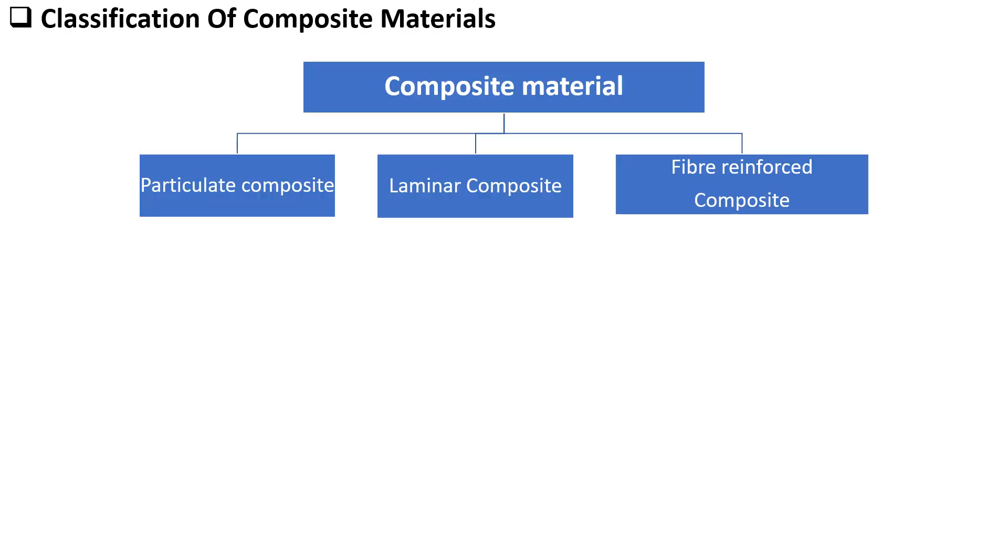Now let's talk about the classification of composite materials. Composite materials are broadly classified into three categories. First is particulate composite, laminar composite and fiber reinforced composite.